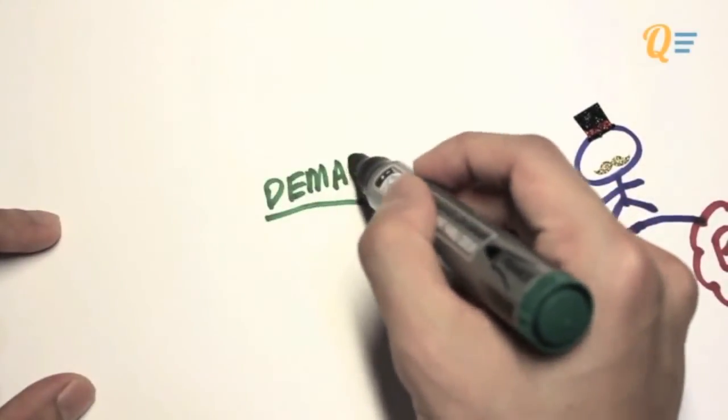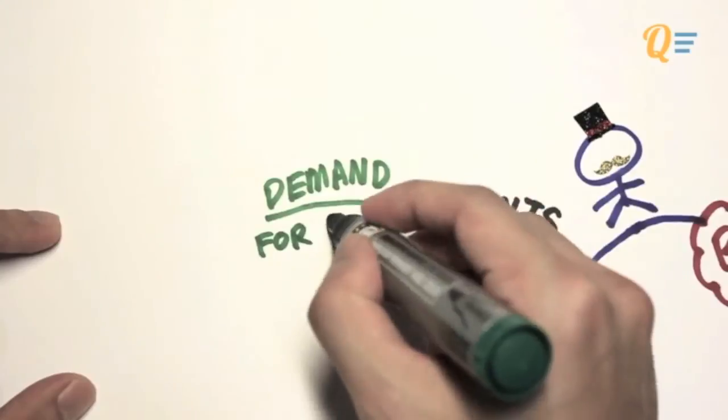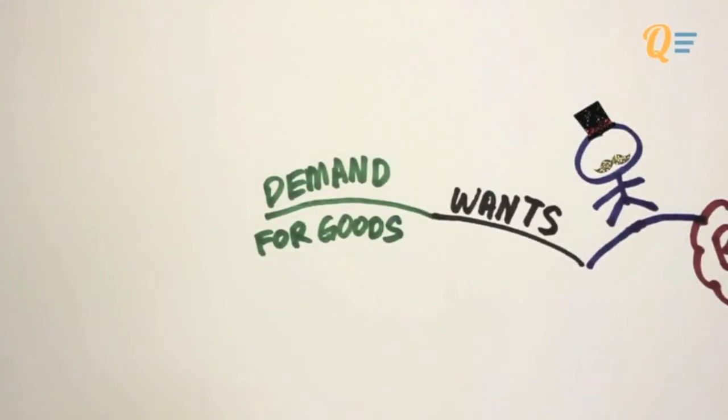An individual has got unlimited wants. That is something that we have established in the previous chapter. So, the demand for goods, and goods can be any form of product or service.